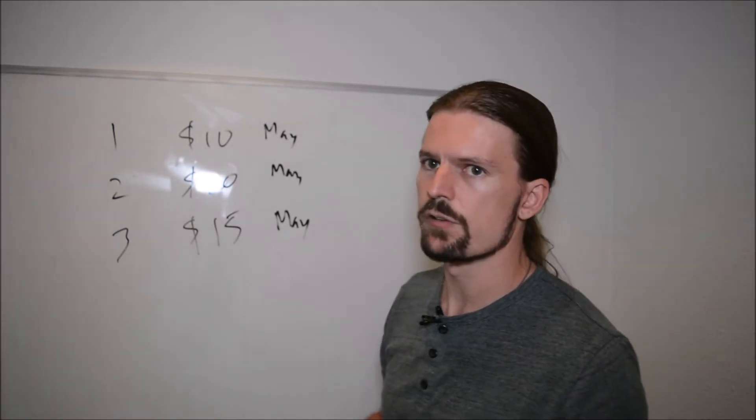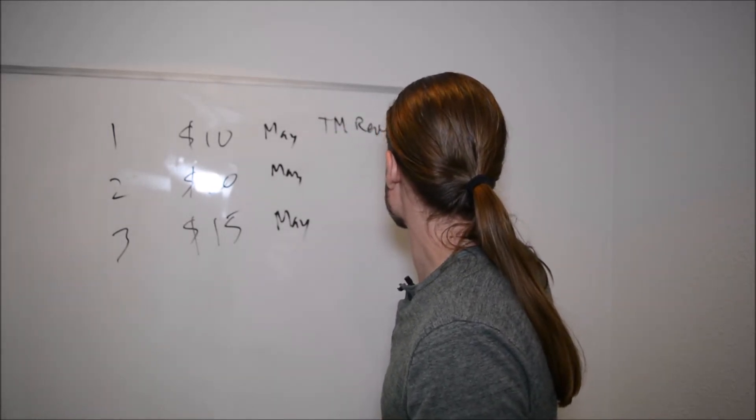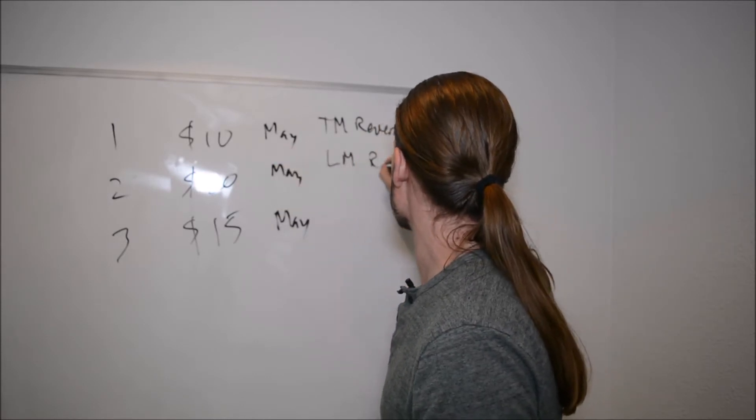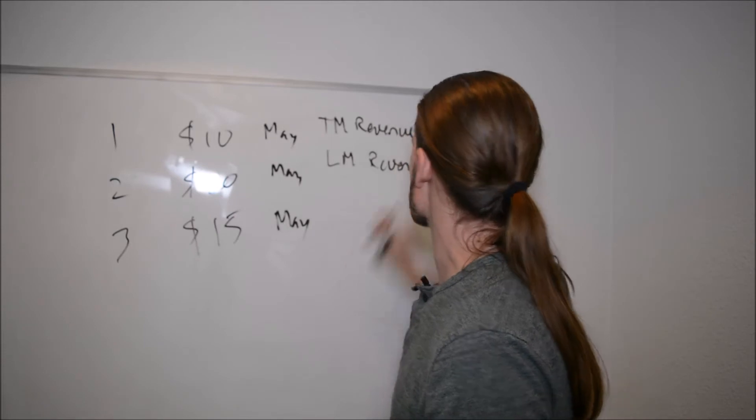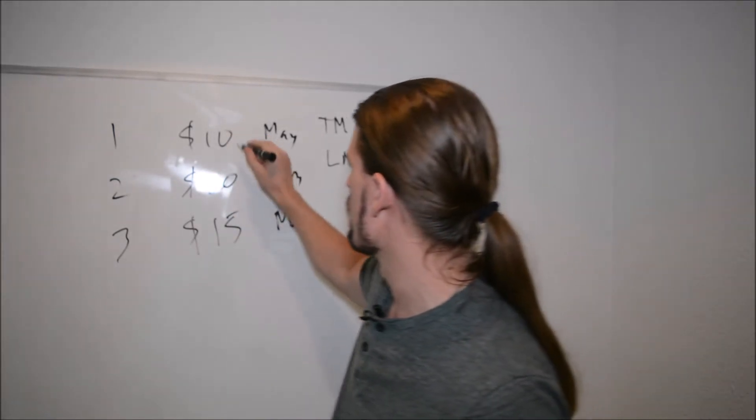And then you have a bunch of different things for April and such. So what you have to do, first of all, is you have to get two numbers. You have to get the this month revenue.